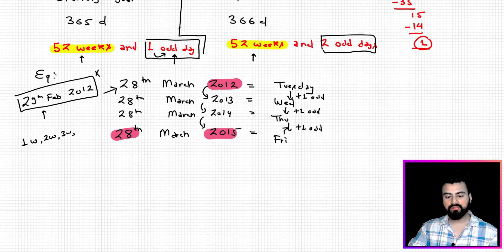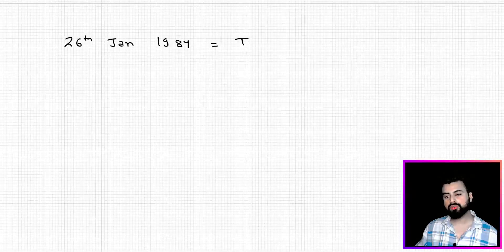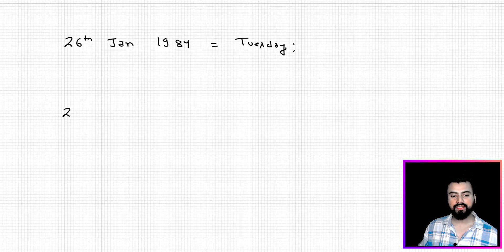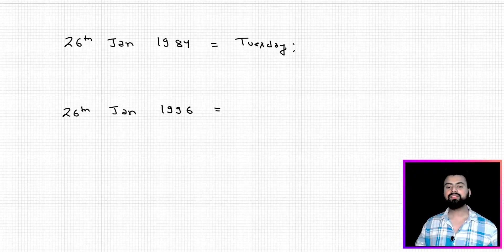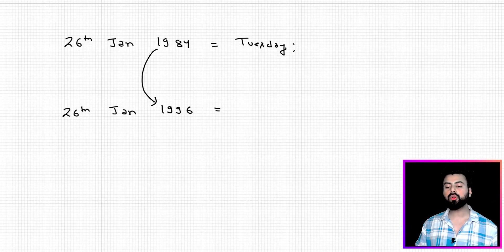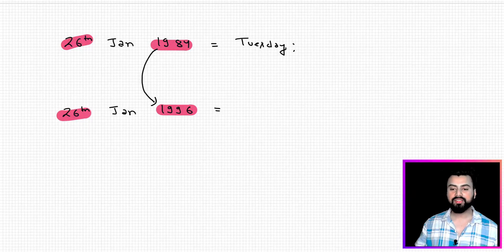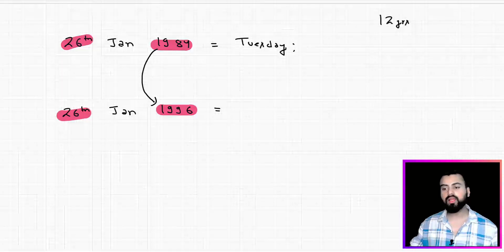Let's discuss one more example. If 26th January 1984 was a Tuesday and you have to find the day on 26th January 1996 — you don't need to go year by year. Since the date is the same, simply find the time difference. From 1984 to 1996 is 12 years.